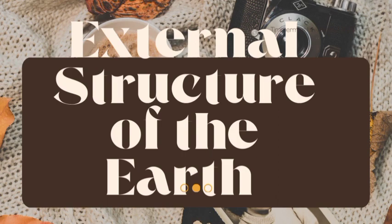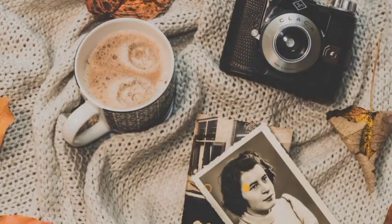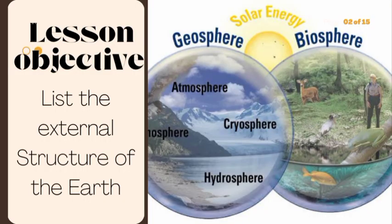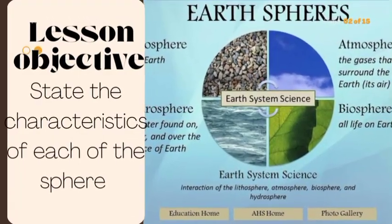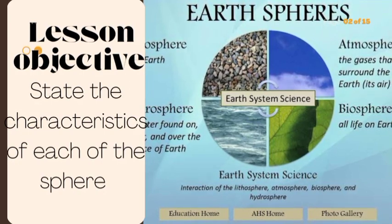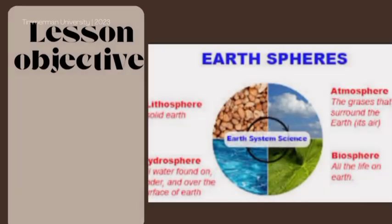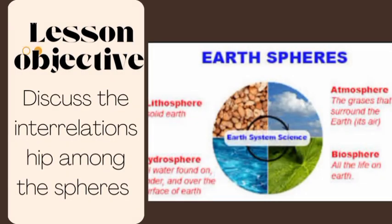And our focus is going to be on the external structure of the earth. At this lesson, we'll be looking at various objectives. One, we should be able to define the external structure of the earth. Also, we're looking at the components or the layers that form the external structure of the earth. And also, we're discussing the characteristics of each of these layers or spheres that form the external structure of the earth. Also, at this lesson, we'll be looking at the interrelationship among the spheres. How do they interact? How do they relate with one another?